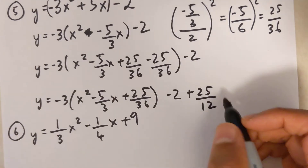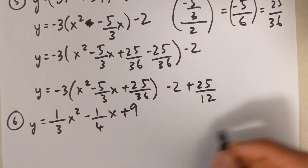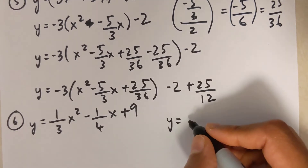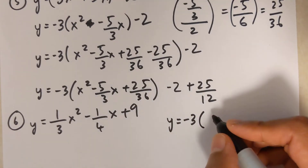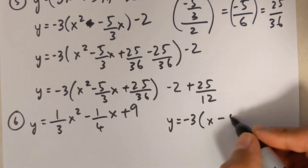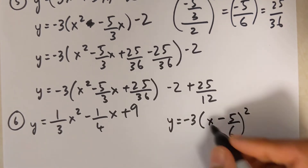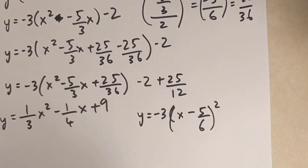There's no space to squeeze in the final step, so continuing: y equals negative 3 times x minus 5 over 6 squared. The remaining terms outside are negative 2 plus 25 over 12. Combining in the calculator gives 1 over 12.